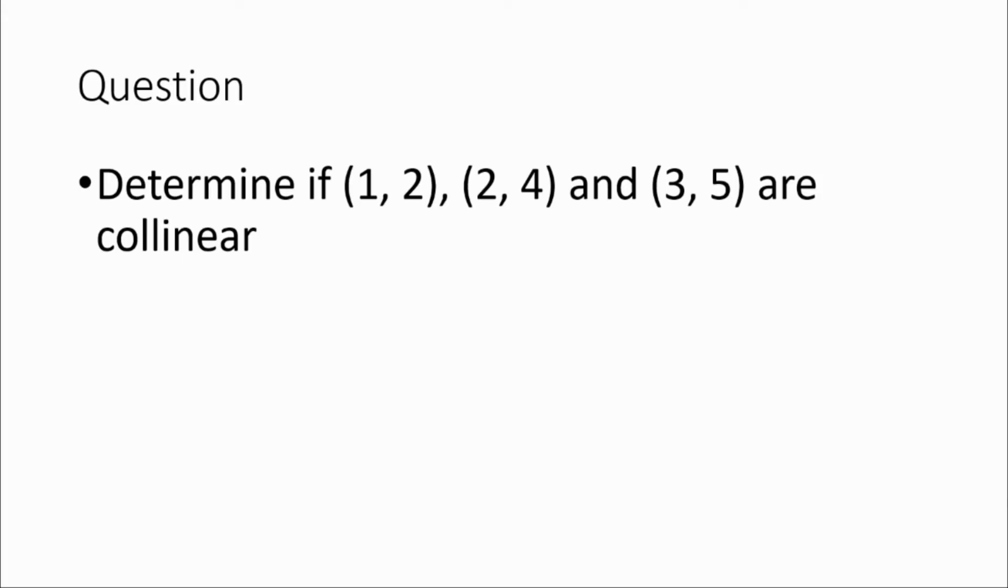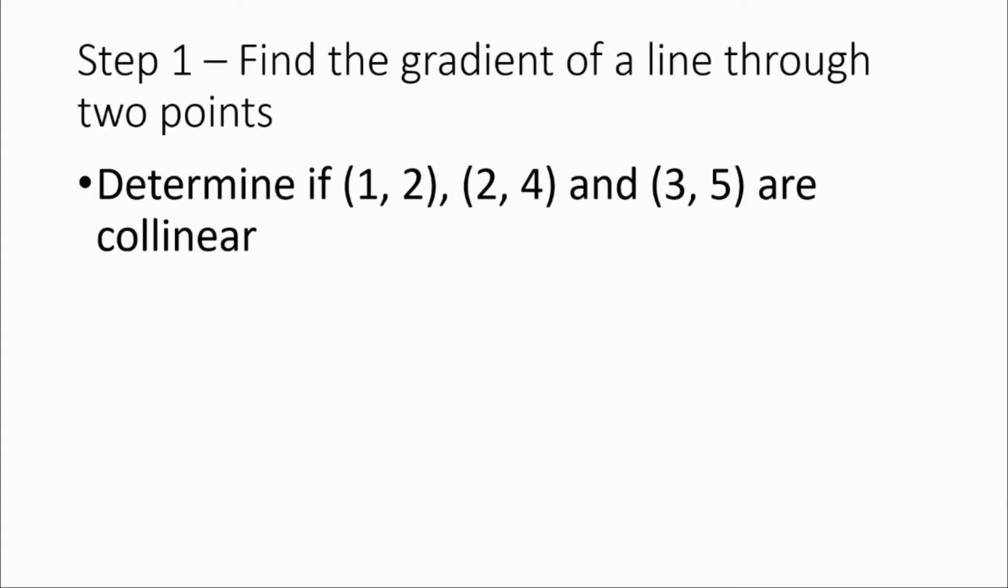Let's look at a worked example that we're going to use to understand this method I'm going to present. We're going to determine if these three points are collinear or not collinear. The first step is we need to find the gradient of a line through two of those points. I'm going to choose the first two points, and for now, I'm going to ignore the third point.